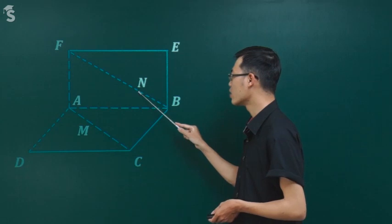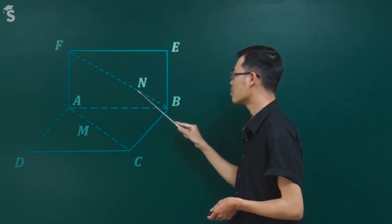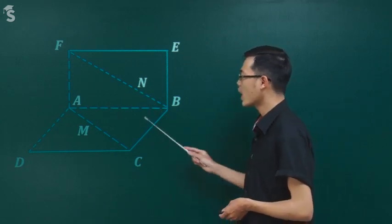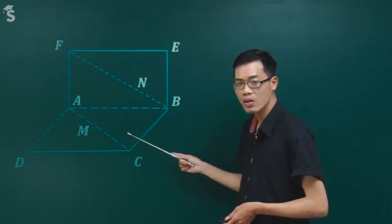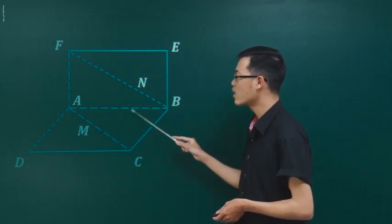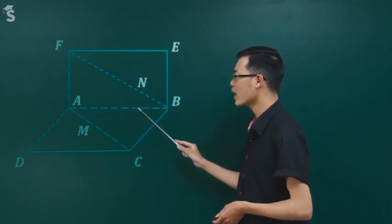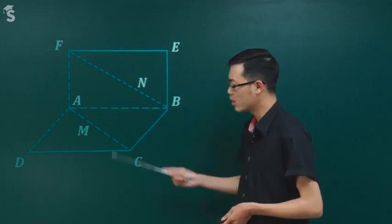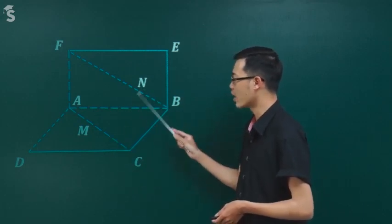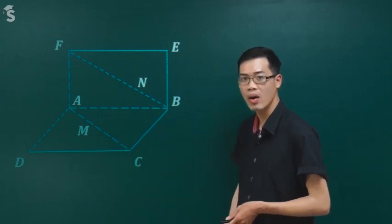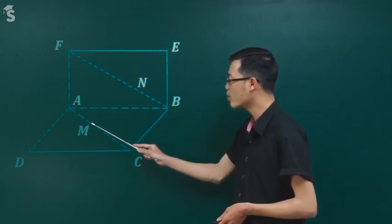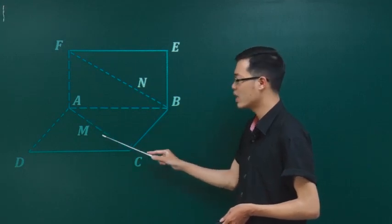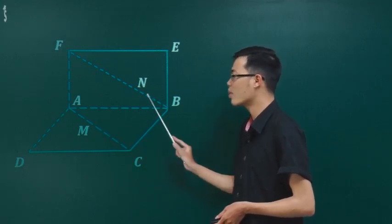Ví dụ thầy lấy AM = 1/3 AC thì thầy cũng phải lấy BN = 1/3 BF. Tại vì hai hình này là hai hình vuông có chung cạnh AB, nên chúng là hai hình vuông bằng nhau, các cạnh tương ứng bằng nhau. Vì vậy hai đường chéo AC và BF bằng nhau. Nếu lấy ở vị trí 1/3 thì chỗ kia cũng phải lấy 1/3 để đảm bảo AM = BN.